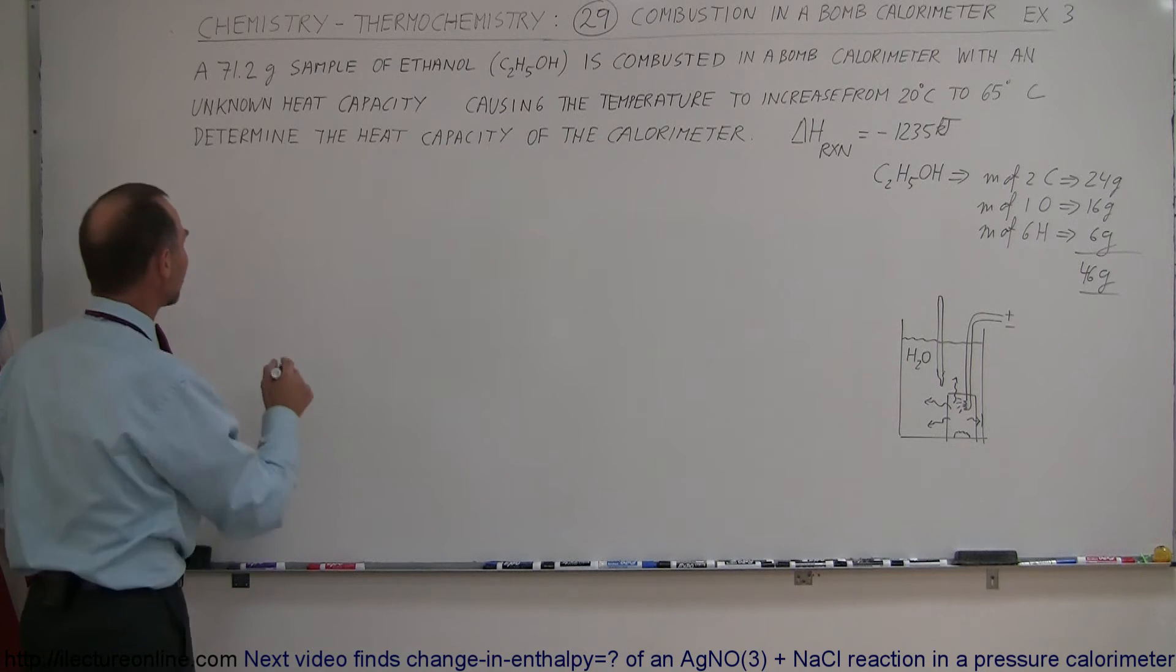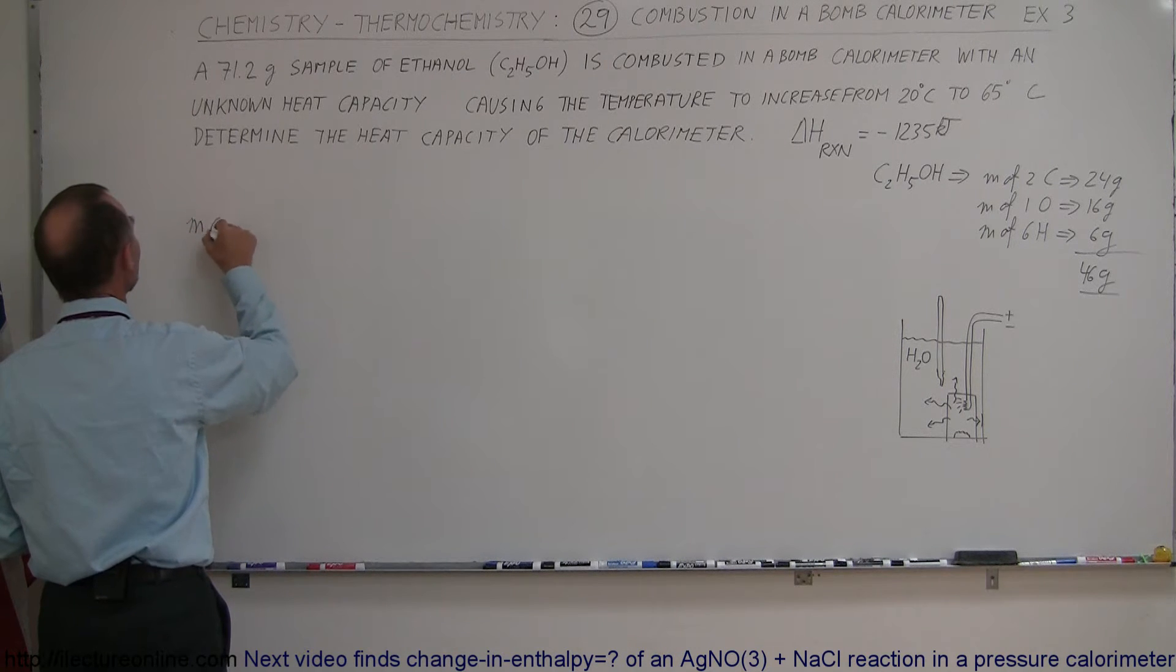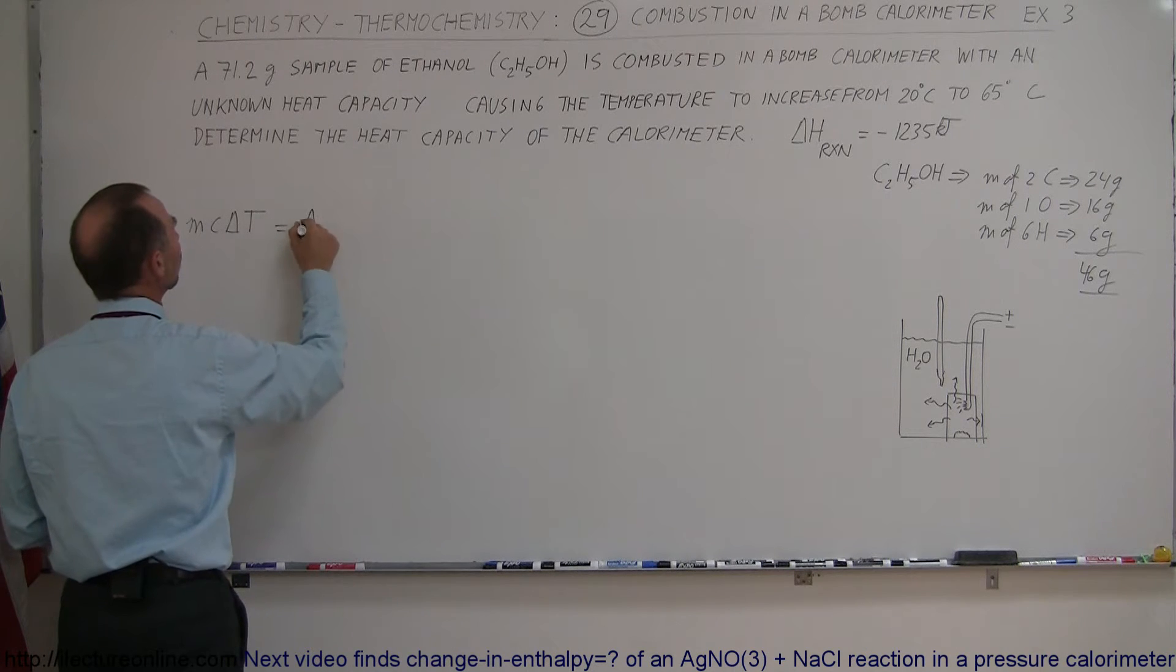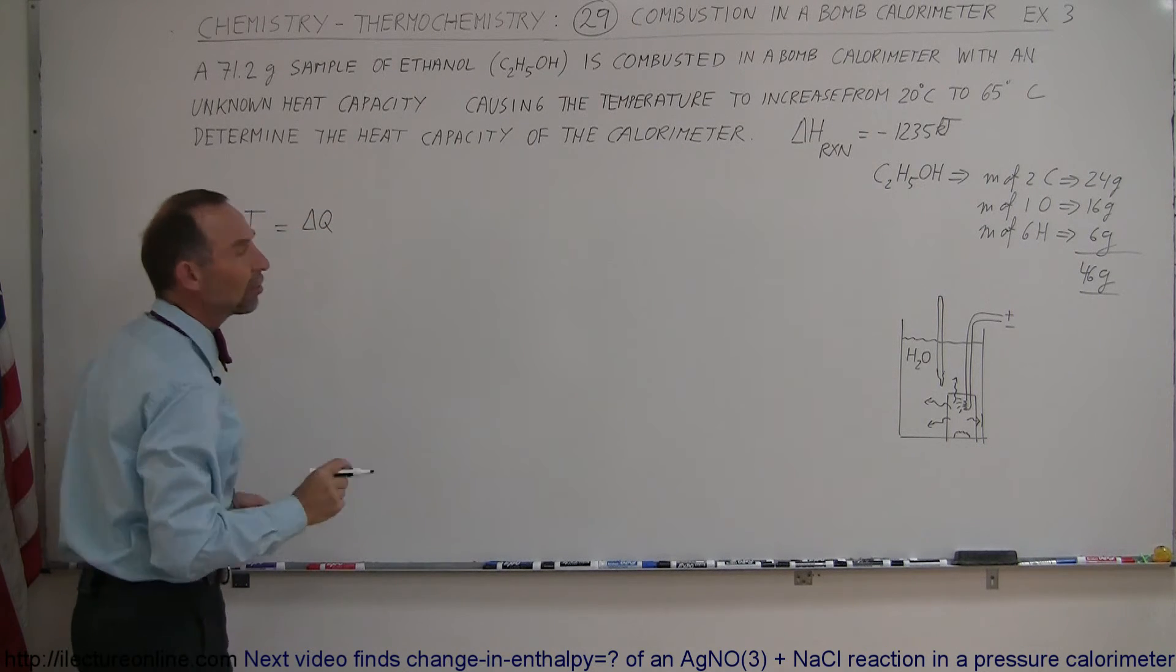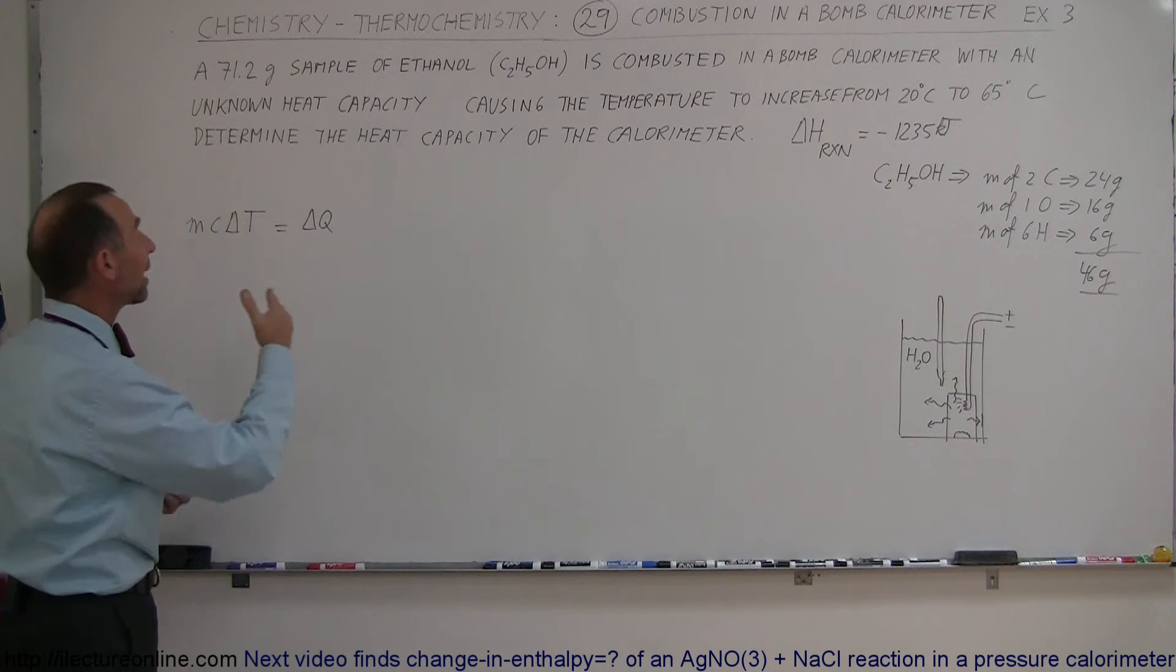Now the equation we use for that is that the MC delta T, which is the heat gained by the calorimeter, is equal to the change of the heat exchange in the reaction, meaning the heat given off by the reaction.